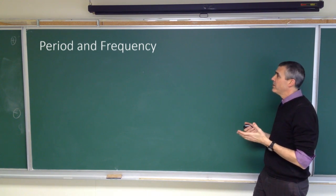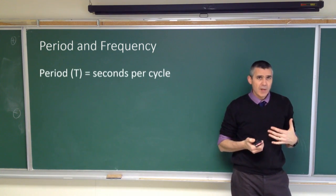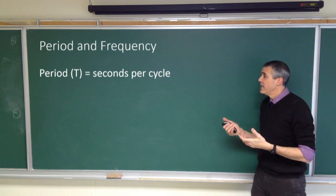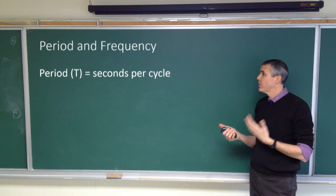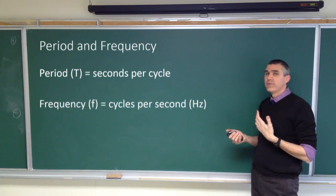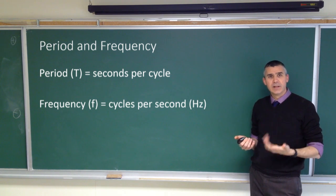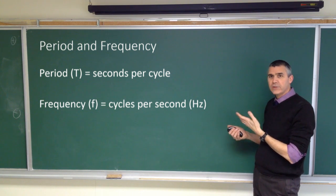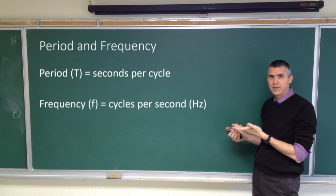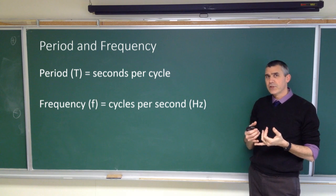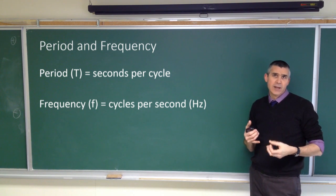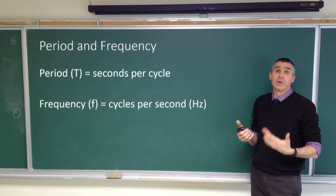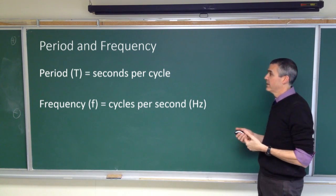Now, period and frequency are kind of interesting because period, which is given the symbol T, is measured in seconds per cycle. And frequency, which is given the letter F, is measured in cycles per second. That's also called hertz. So hertz, H-Z, is the unit of frequency, and it simply means per second, or one over a second.